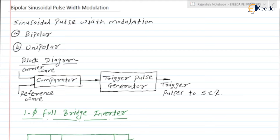In the Single Pulse Width Modulation Technique, corresponding to each half cycle, in the output we get only a single pulse — that is why it is known as the Single Pulse Modulation Technique. In the Multiple Pulse Width Modulation Technique, corresponding to each half cycle of the output voltage, we get multiple pulses, but the width of each pulse was the same.